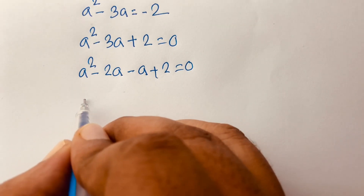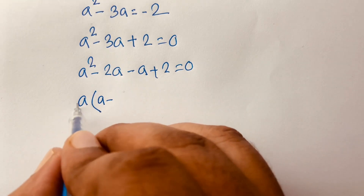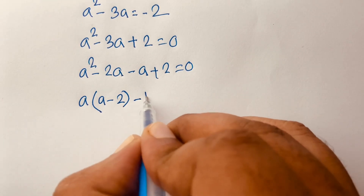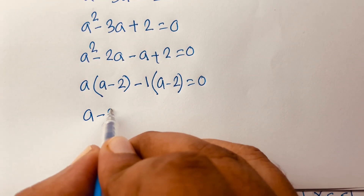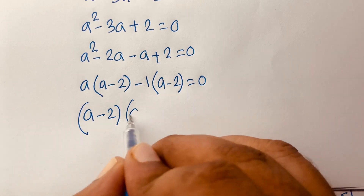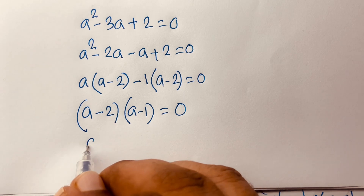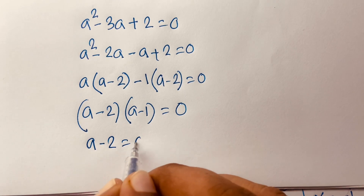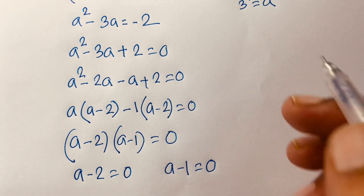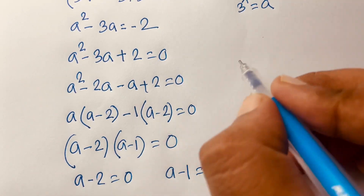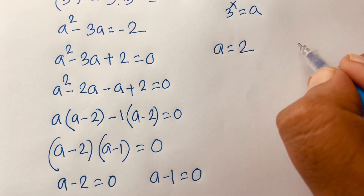Taking a as common from the first two terms gives a(a minus 2), and minus 1 as common from the last two terms gives minus 1(a minus 2). So we get (a minus 2)(a minus 1) equals 0. Therefore, a minus 2 equals 0 or a minus 1 equals 0, giving a equals 2 or a equals 1.